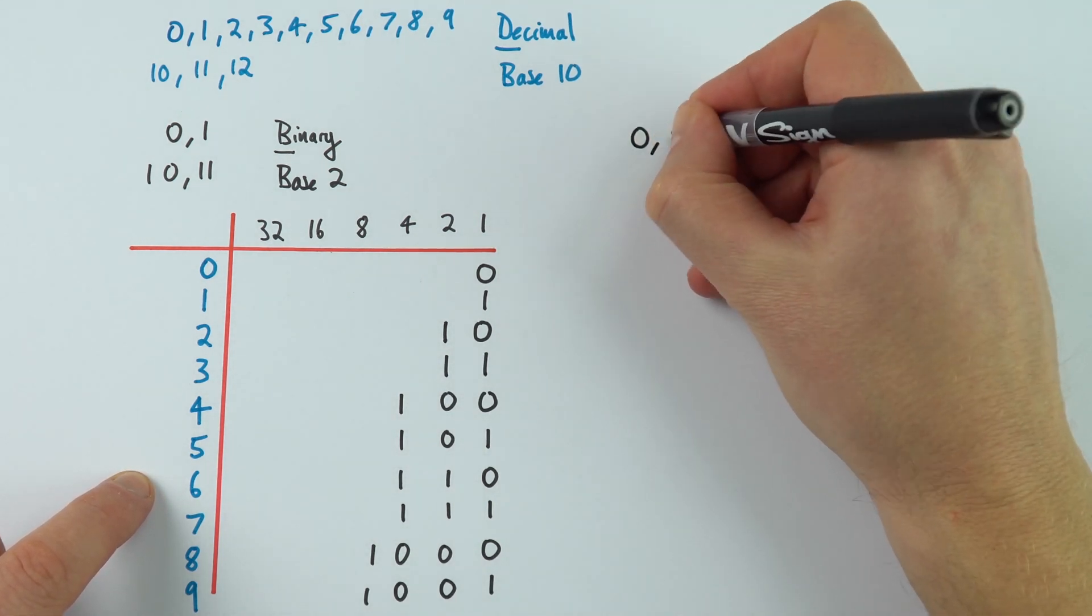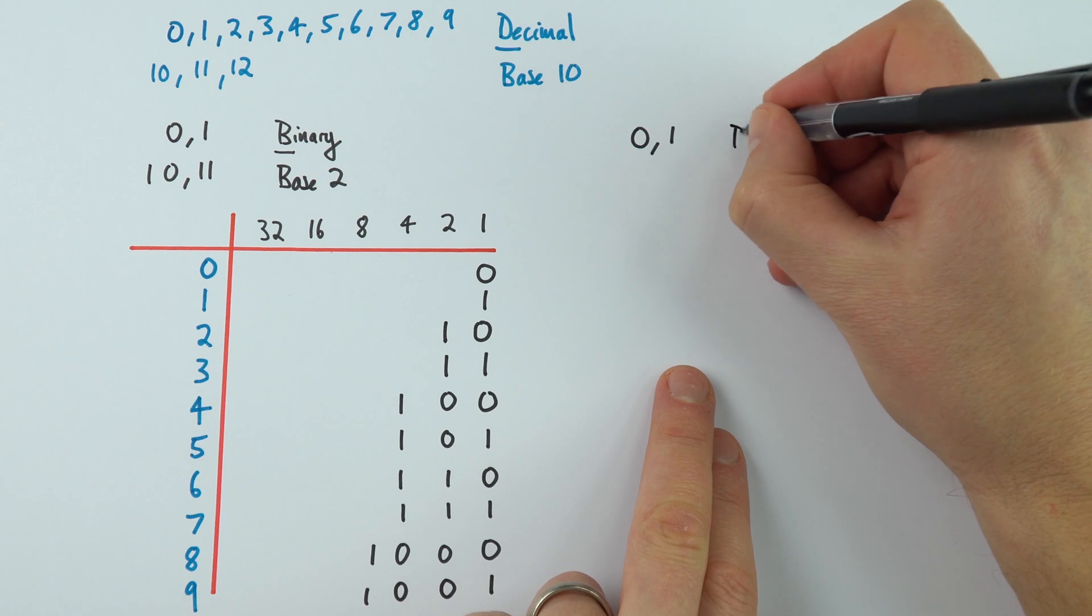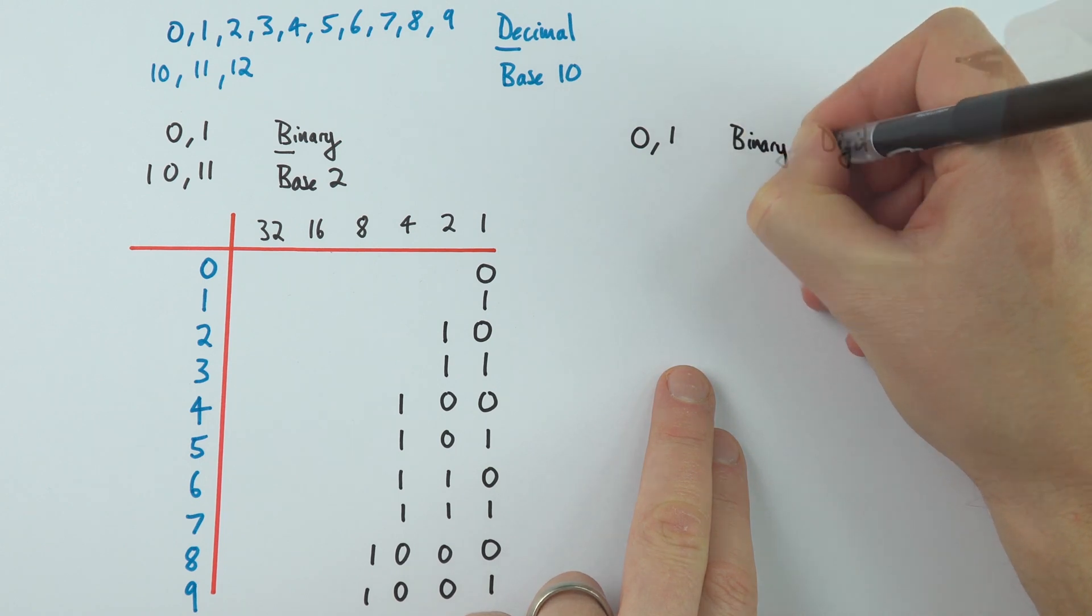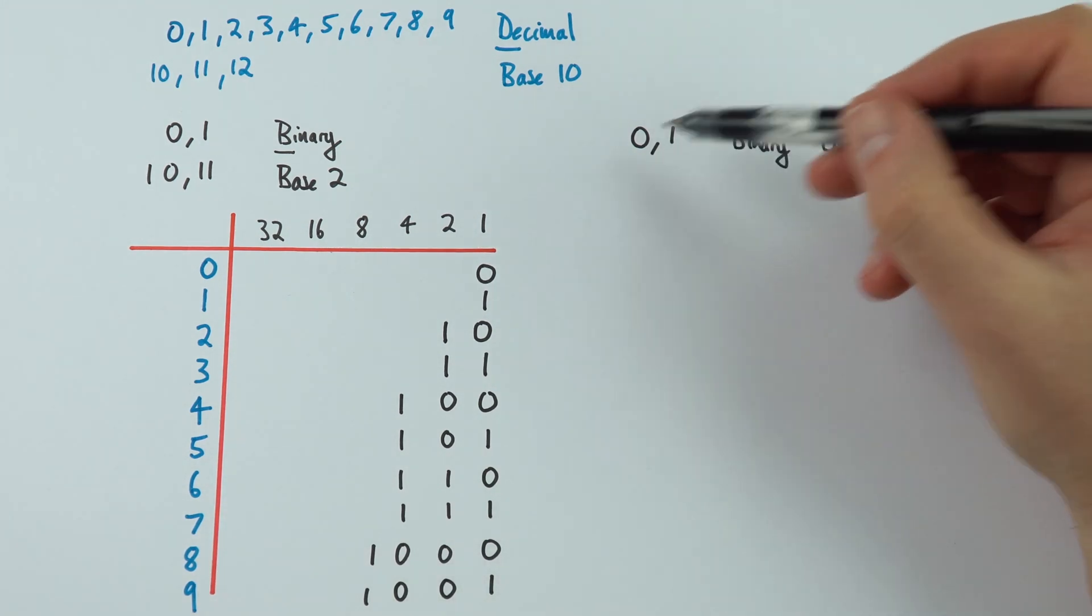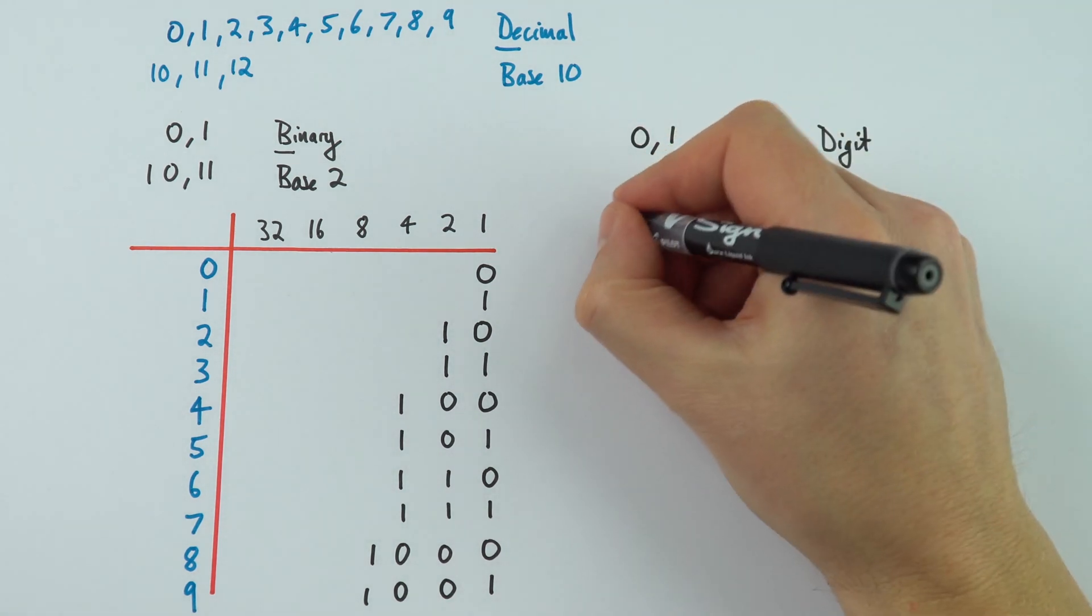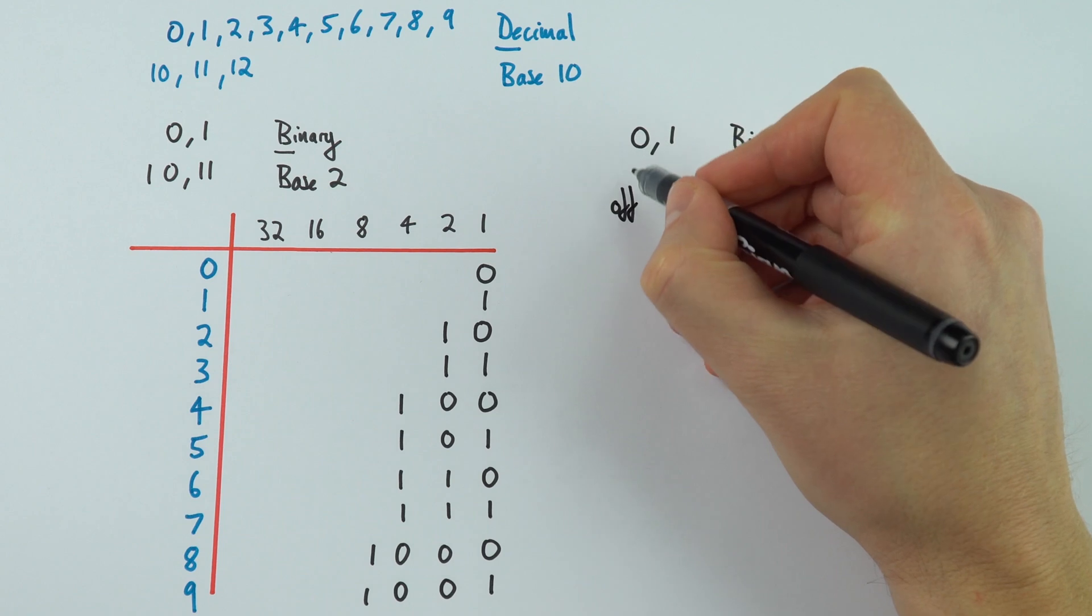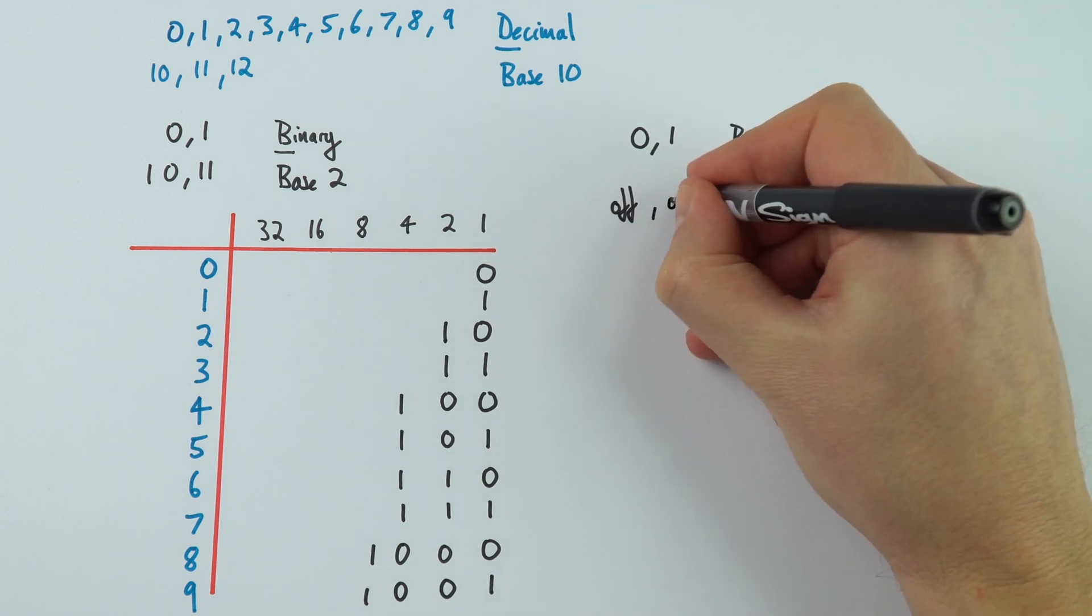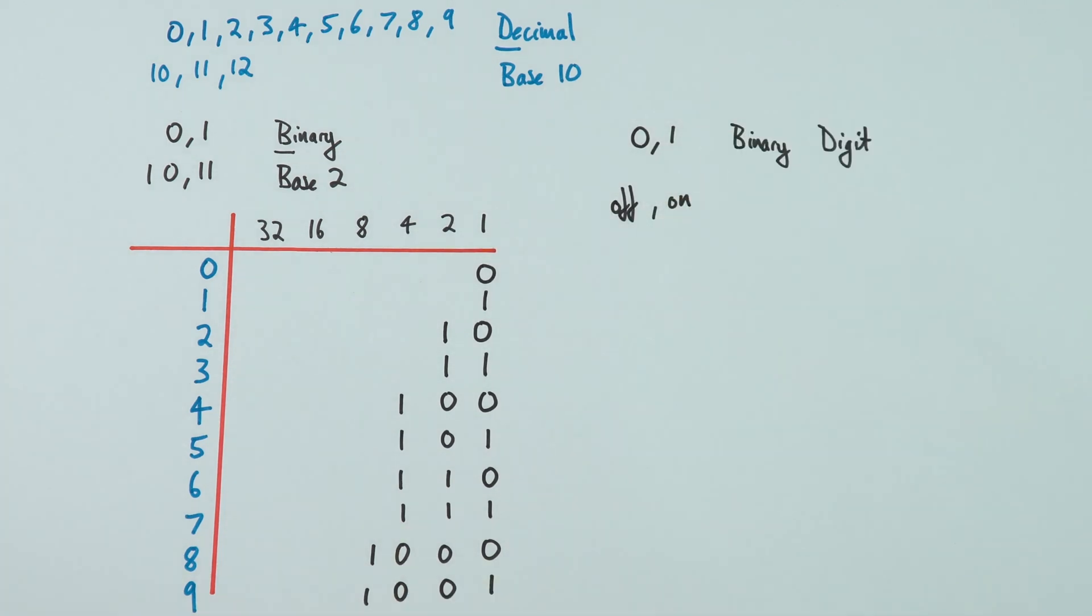And we use this for a good reason. So 0 and 1, these are our binary digits, and that means something can have one of two values. Now this is really useful when it comes to electronics, because you can maybe have something which is off, in which case that represents a 0, or it could be on, in which case it's representing 1.